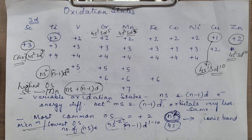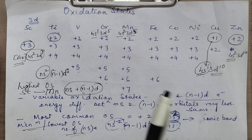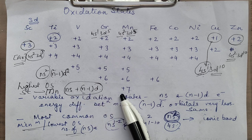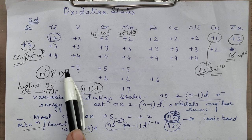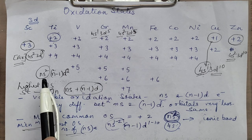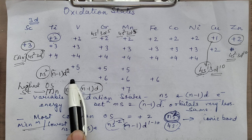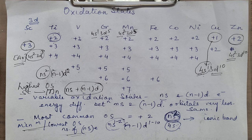Thereafter the pairing of D electrons begins — from d5, from d6 onwards the pairing begins. So d6 will have 4 unpaired, d7 will have 3 unpaired, 2, 1, and so on. Since the pairing begins, the paired ones will not be able to form covalent bonds. As the number of unpaired electrons decreases after Mn, the number of oxidation states exhibited by them also decreases.